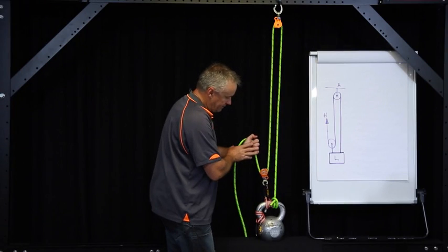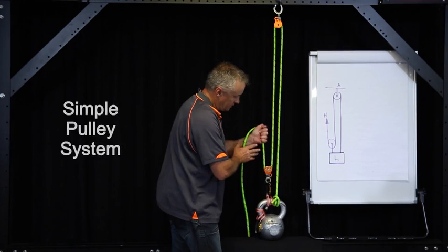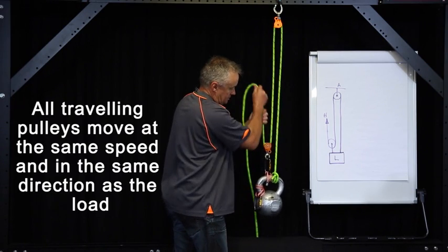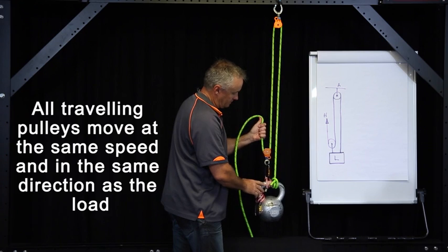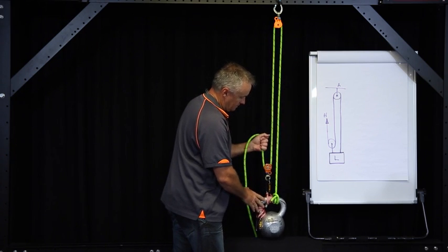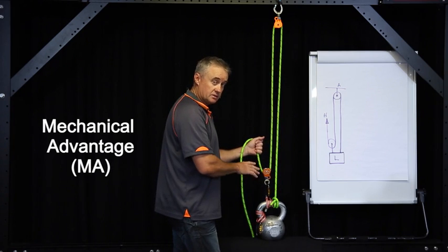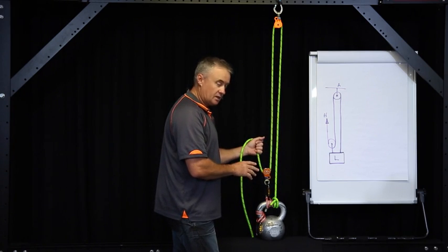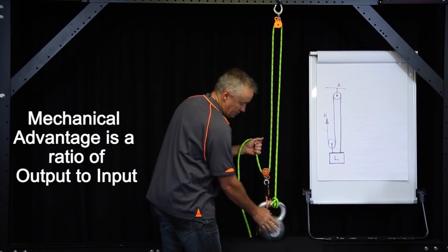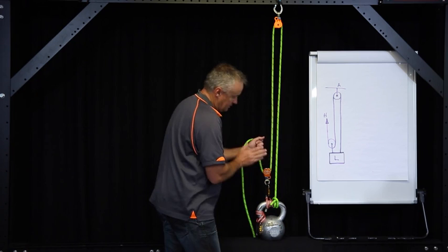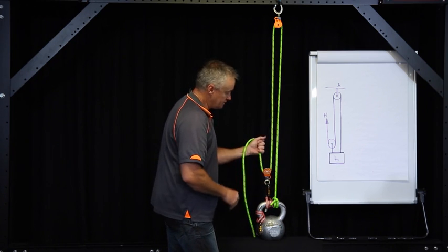What we have here is a simple pulley system. In a simple pulley system, all travelling pulleys move at the same speed and in the same direction as the load. Now we want to establish what the mechanical advantage is of our simple pulley system. The mechanical advantage is a ratio of output to input — that is our output, that is our input. We want to work out what the ratio is between those two.